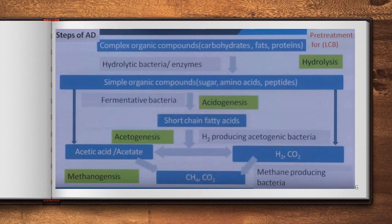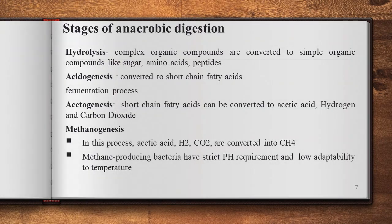To summarize, the four stages of anaerobic digestion are: first, hydrolysis — complex organic compounds are converted to simple organic compounds like sugars, amino acids, and peptides; second, acidogenesis — sugars and amino acids are converted to short-chain fatty acids through fermentation; third, acetogenesis — short-chain fatty acids are converted to acetic acid, hydrogen, and carbon dioxide.